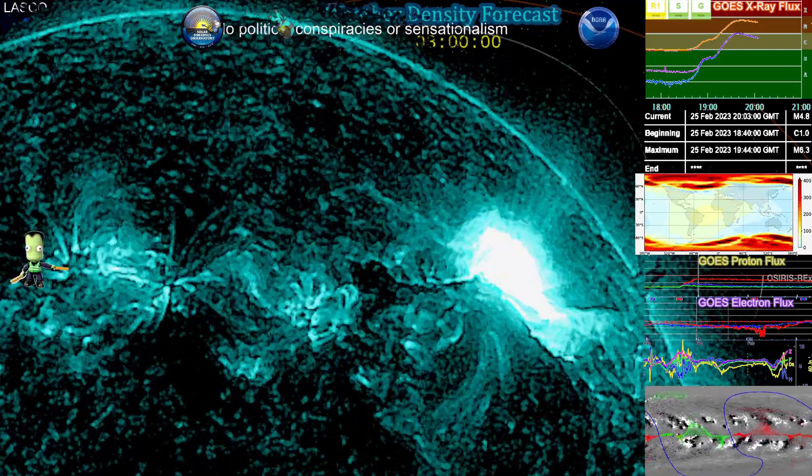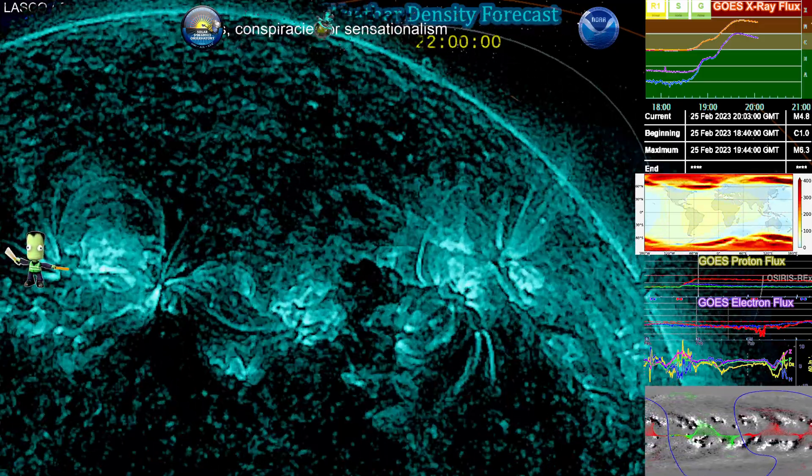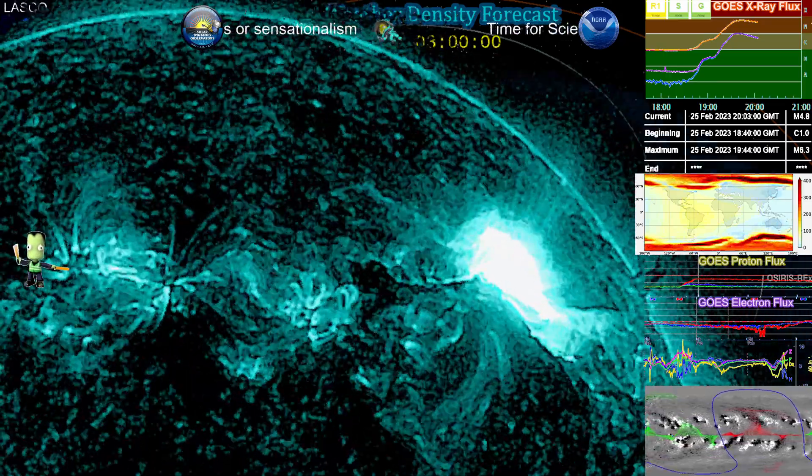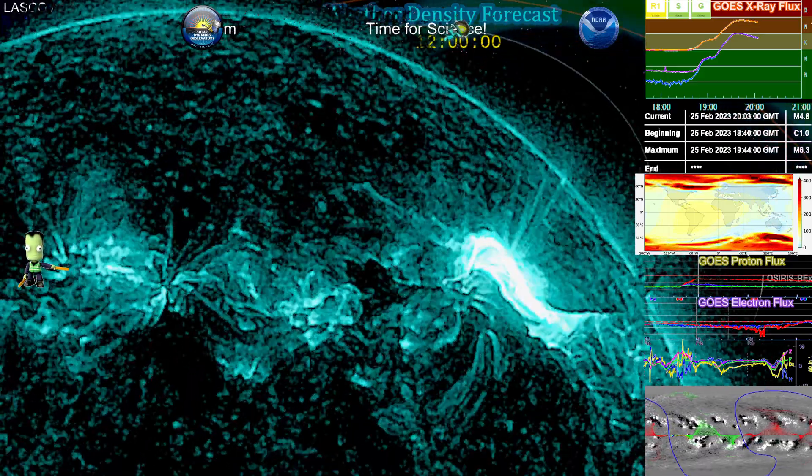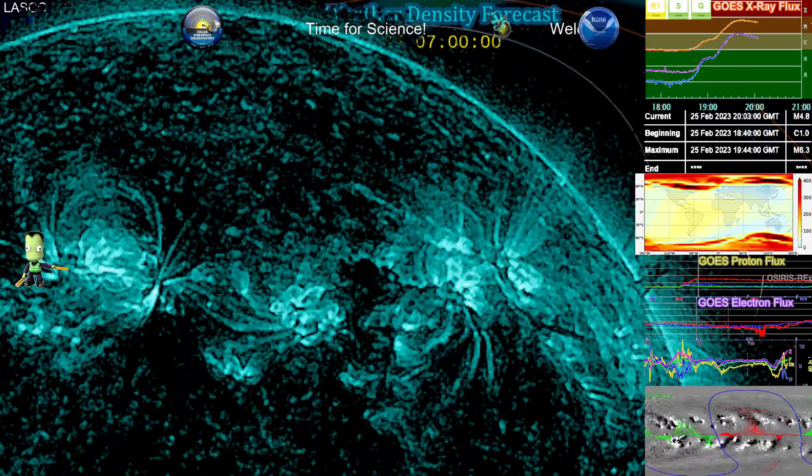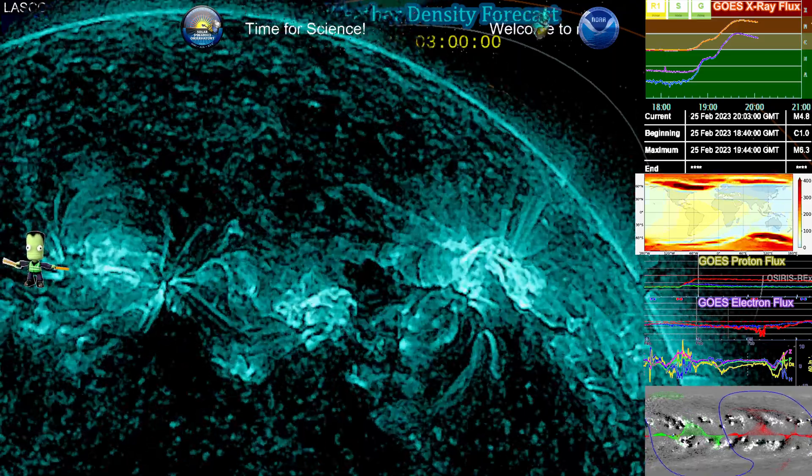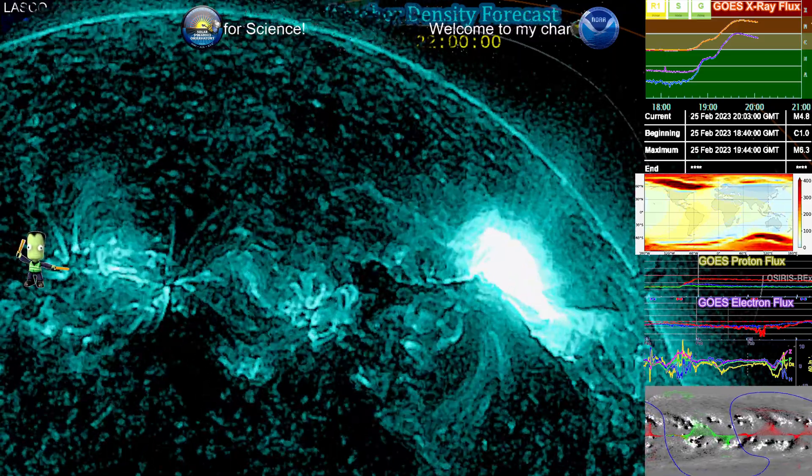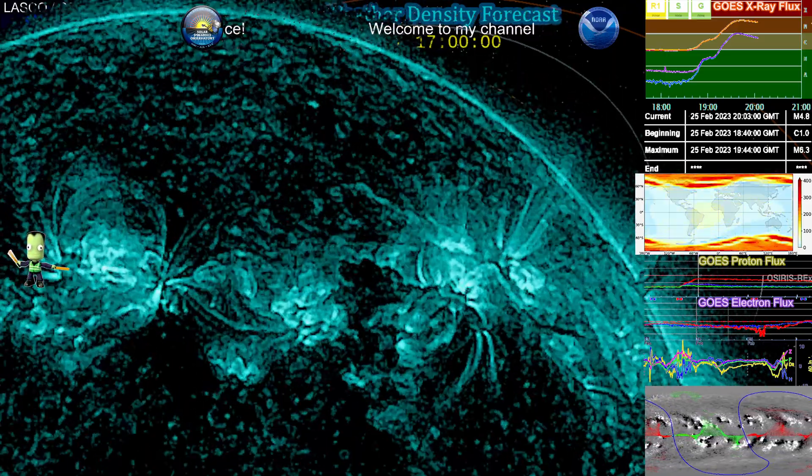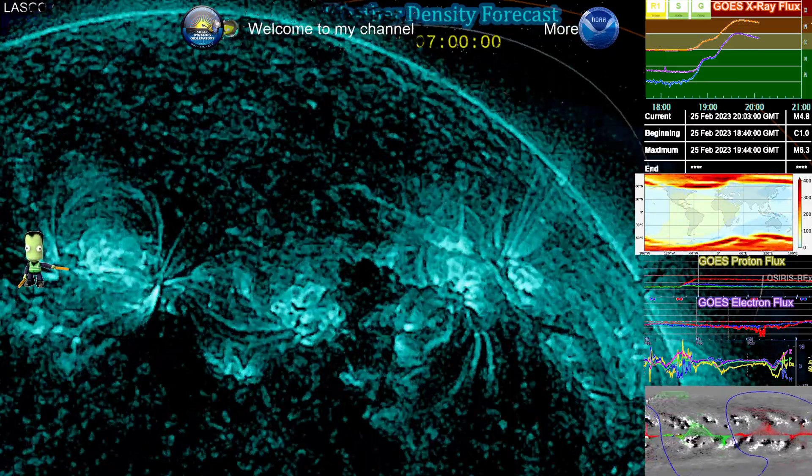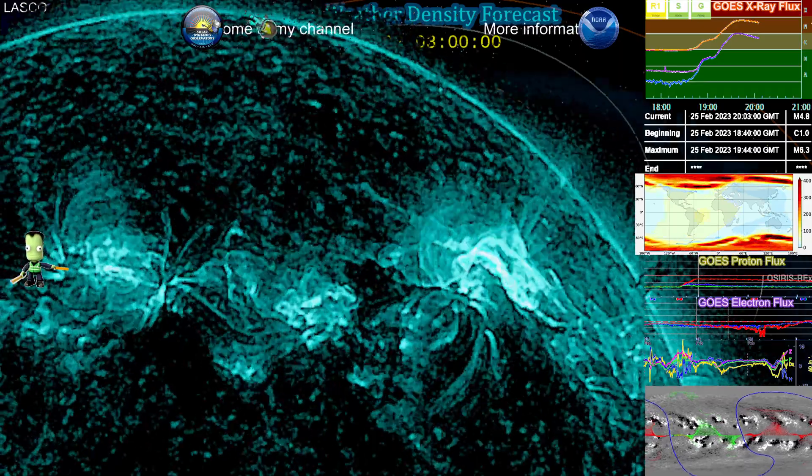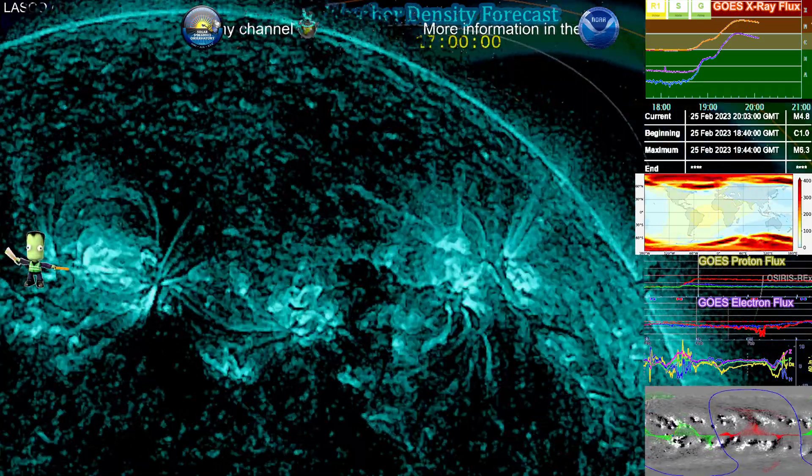And here we have indeed a coronal mass ejection from Region 3229, which is mostly going westward, slightly north, but is expanding substantially quick. So there's a good chance that that might even become a player into the solar weather we might see for Earth.